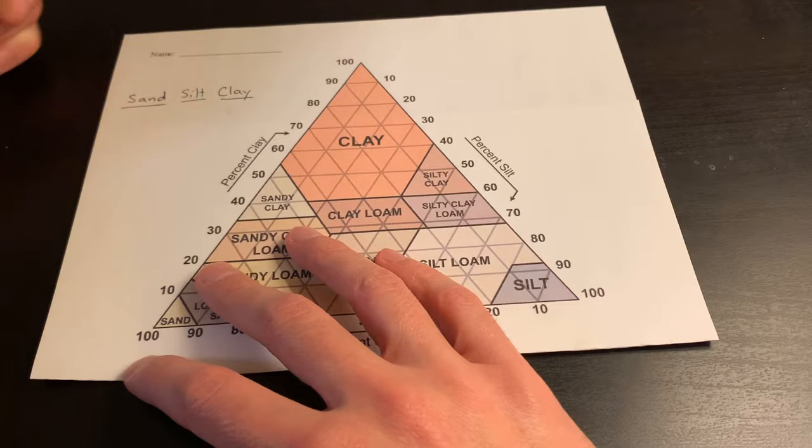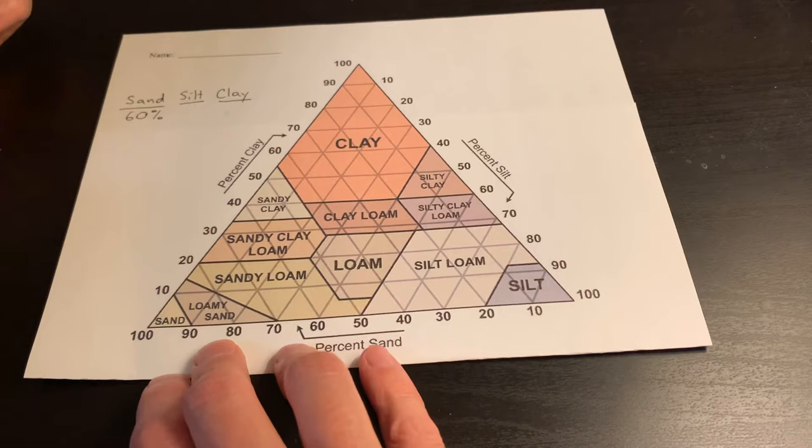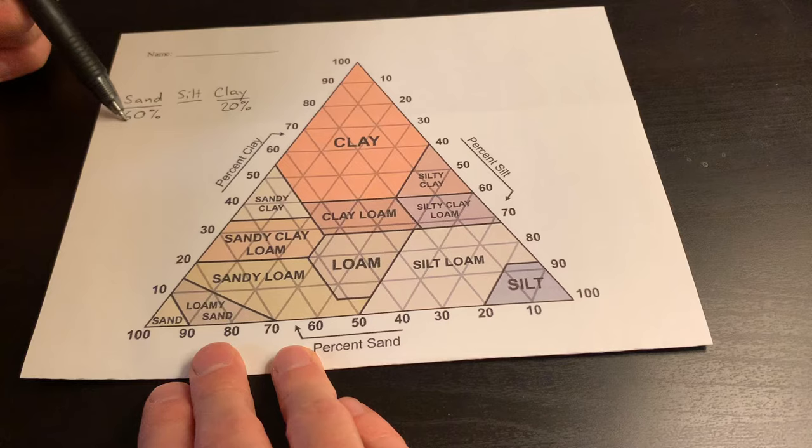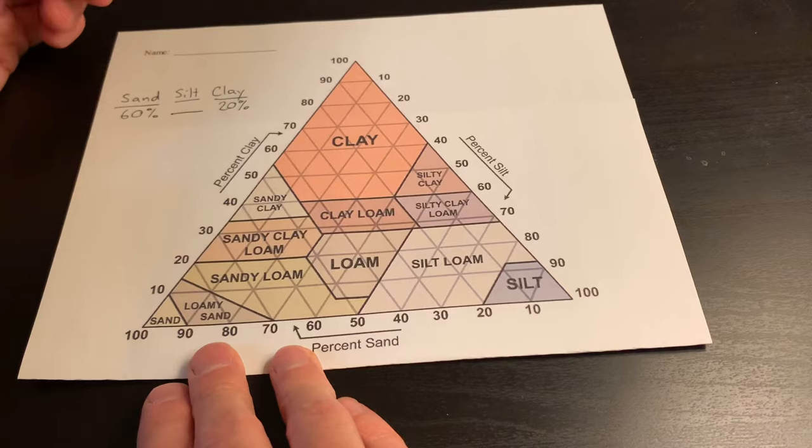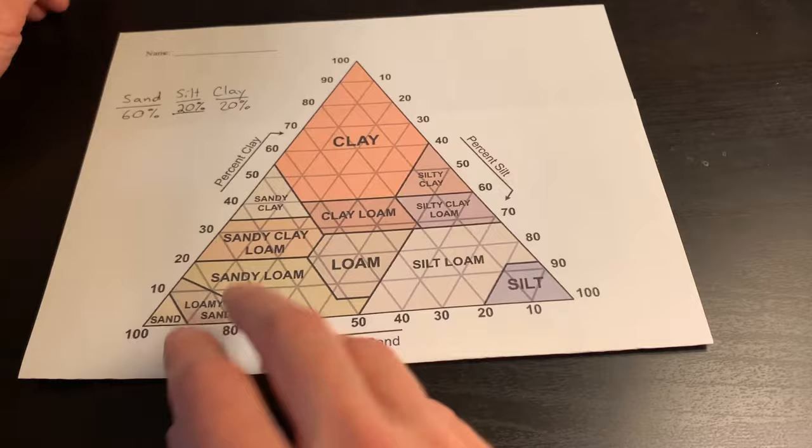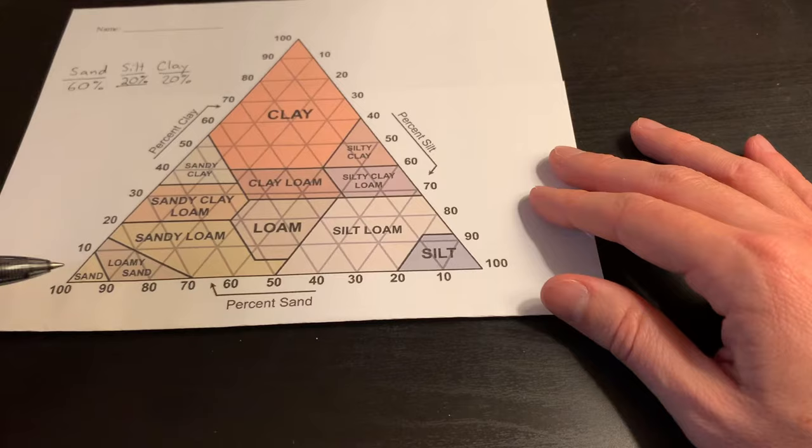Let's just say we have sand, silt, and clay, and let's say we discover that we have 60 percent sand and that we have 20 percent clay. Now if we have 60 percent sand and 20 percent clay, what percent silt should we have? We know that it needs to add up to 100 percent, so we know we should have 20 percent silt. So if we've got 60, 20, and 20, we'll consult our soil texture triangle.